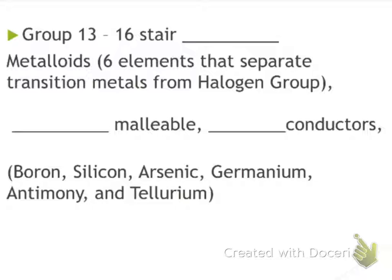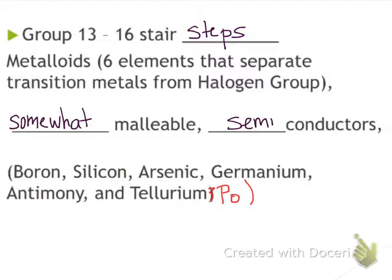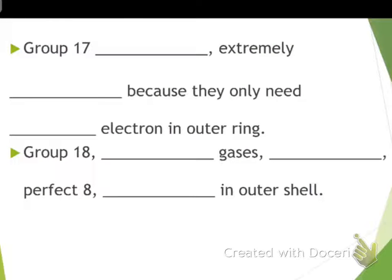Groups thirteen through sixteen are stair-step metals. These are metalloids, and there are six that separate transition metals from the halogen group. Actually, some tables include a seventh one, and I'm gonna go ahead and add its chemical symbol here, but I'm not gonna write it out because I don't know how to spell it off the top of my head. So just add that in as the seventh one, and we'll talk about it on your table when we talk about seven. This group is somewhat malleable and they're semiconductors. This is the metalloid section, and there's your stair-step. Draw your stair-step.